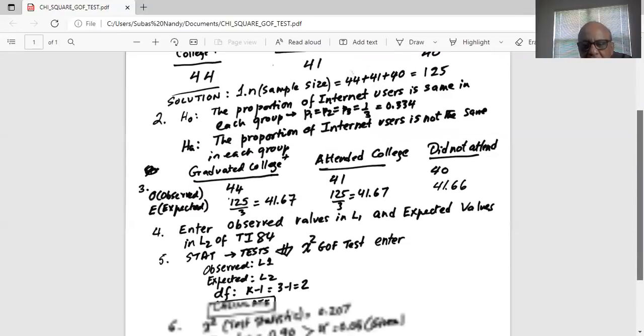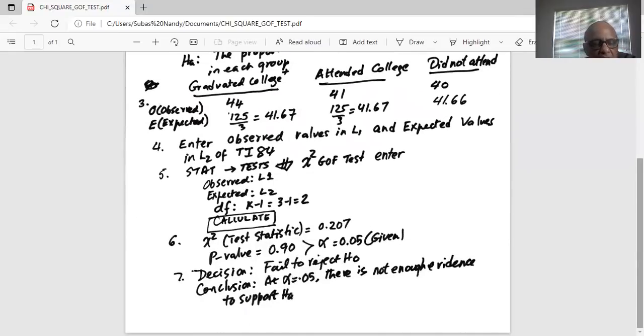So the test statistic value works out as 0.207. Look at the p-value, 0.901. This is greater than level of significance, 0.05. Therefore, since p is greater than alpha, decision is to not reject H0. Conclusion at alpha equal to 0.05, there is not enough evidence to support the alternate.